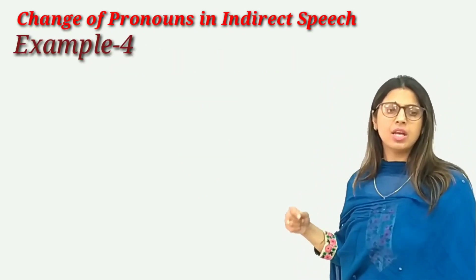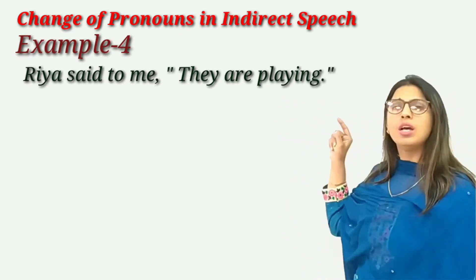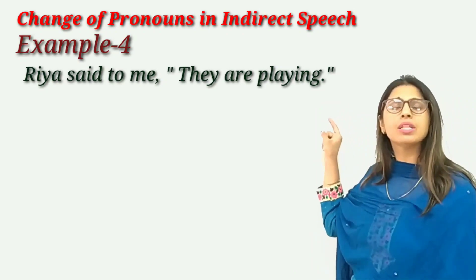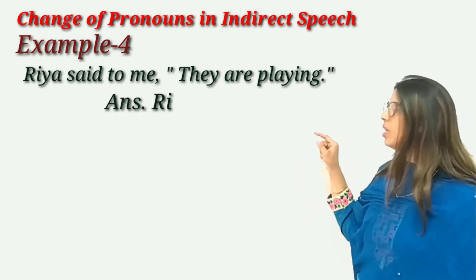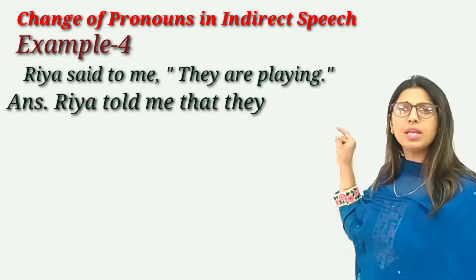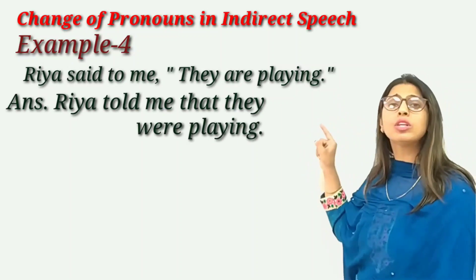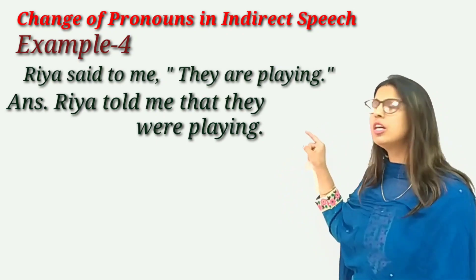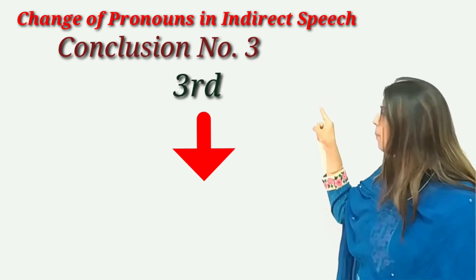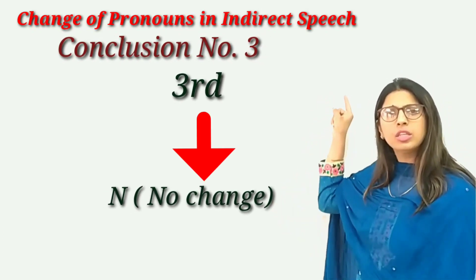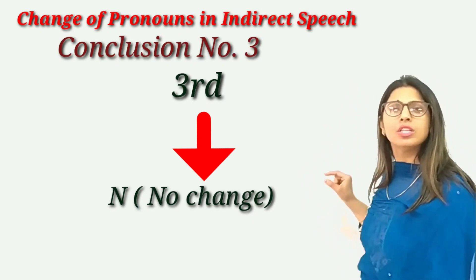Next sentence: Rhea said to me, 'They are playing.' Now here we have 'they' inside the inverted commas, and 'they' is the third person pronoun. So the answer would be: Rhea told me that they were playing. This 'they' has not changed because it is the third person pronoun. So the third person will not change. Three stands for N — no change.